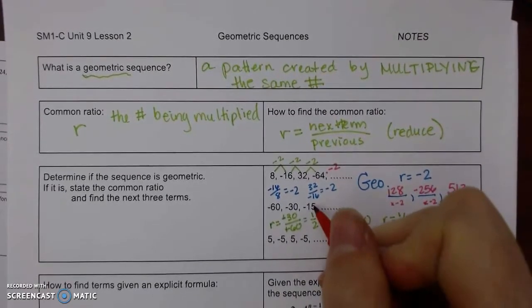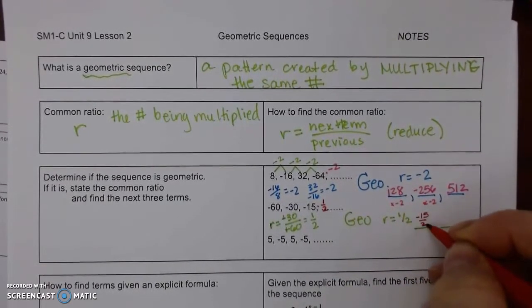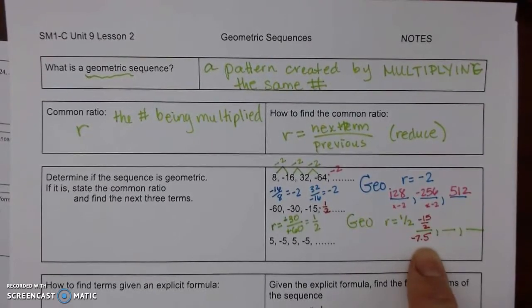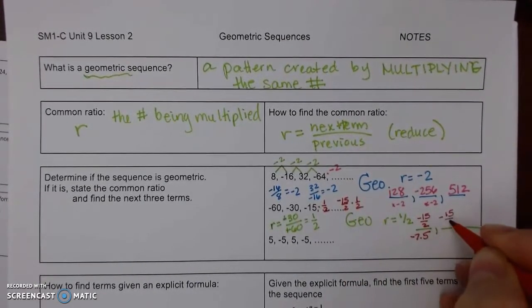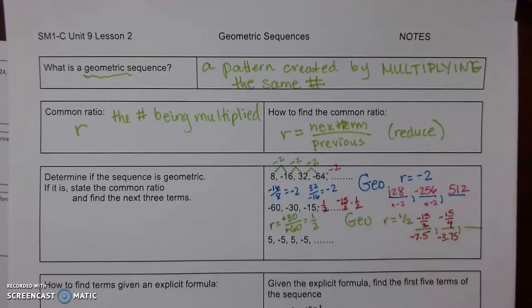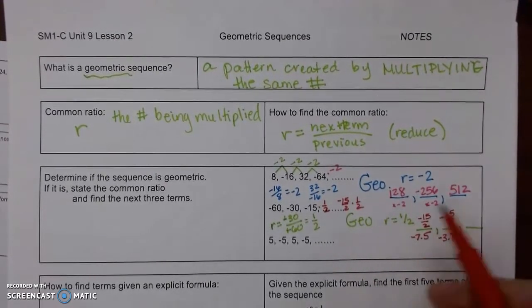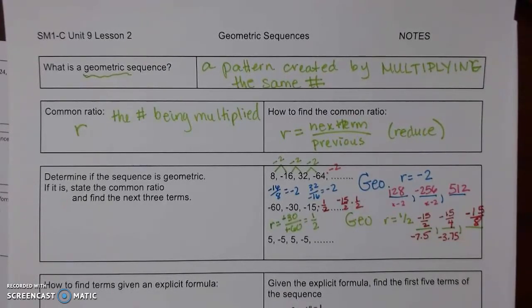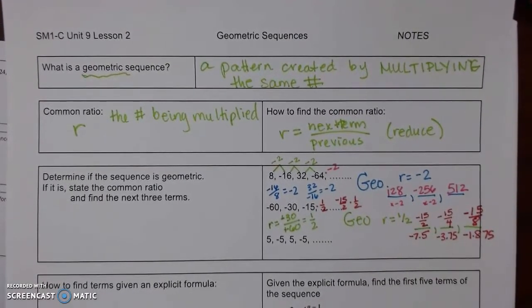We've got negative 15 times 1/2, and we can write that two ways. We can either write that as negative 15 halves, or you can write that as negative 7.5. Since this decimal stops, it's a good answer. Then I'm going to take negative 15 halves times 1/2, which is negative 15 fourths, or negative 7.5 divided by 2, which is negative 3.75. And then, negative 15 fourths times 1/2 is negative 15 over 8. Or, take 3.75 and times 1/2 is negative 1.875. Do not round any of your decimals if you're using them.